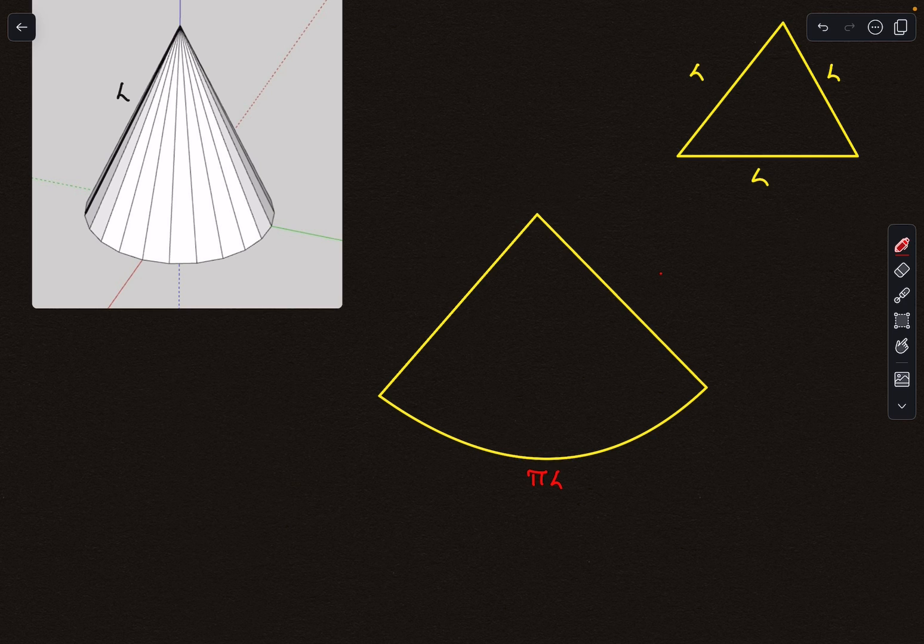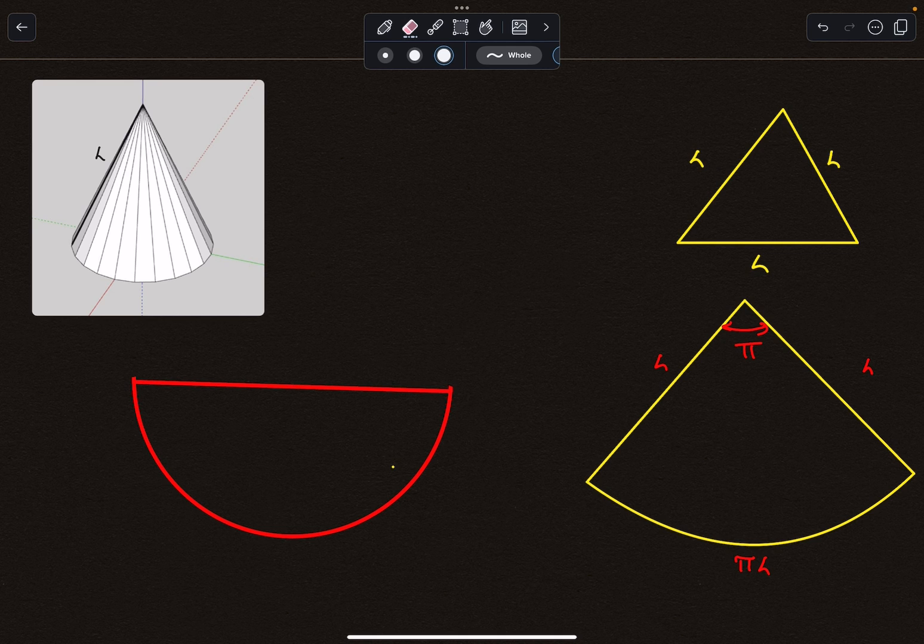Now the radii of this arc is simply L, because L is also the slant height of the cone. So as you can see, this angle comes out to be π, because radius times angle equals arc length. So this angle actually is π, so the situation looks like something like this—it represents a semicircle.